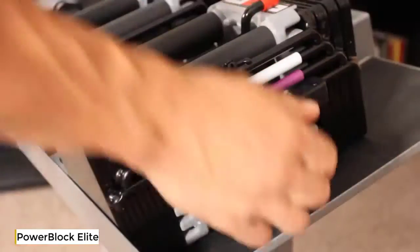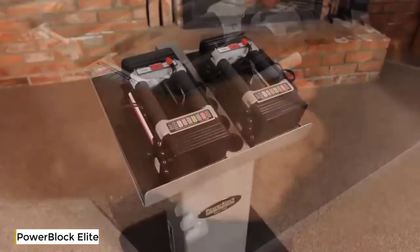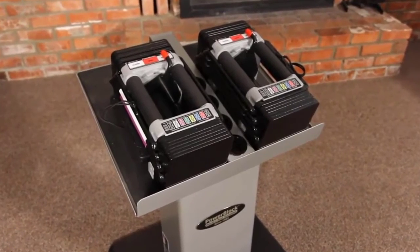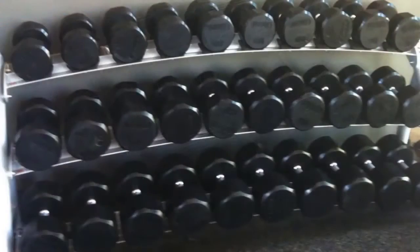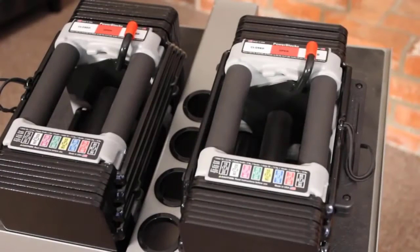The Elite 50 set has a weight range of 5 to 50 pounds per hand. The Elite 50 set replaces 16 pairs of dumbbells, or 825 pounds of free weights, in the space of just one pair.